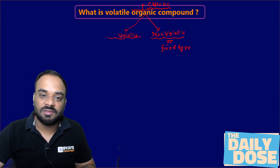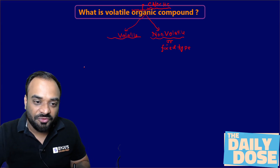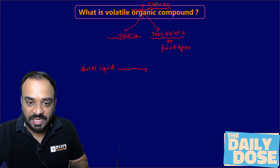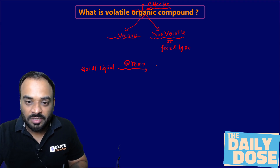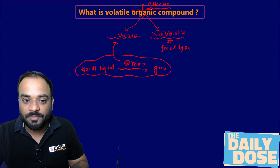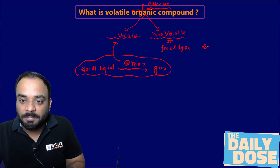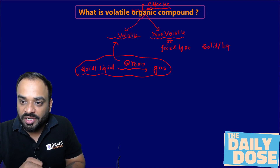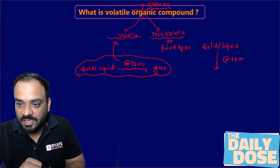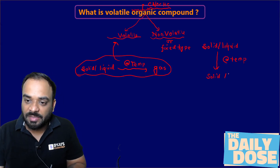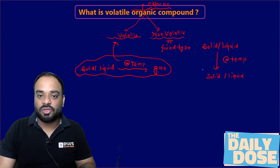Now why is it known as fixed, and why is it basically volatile? If you have any kind of solid or liquid which is trying to change its state at a particular temperature — like it may get converted into gas — then such a compound is known as volatile organic compound. Non-volatile organic compounds are those which are not able to change their state; they remain solid or liquid at a particular temperature. That's why these are two different things: volatile and non-volatile.